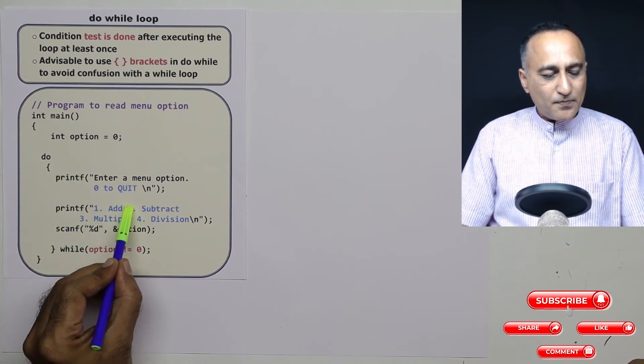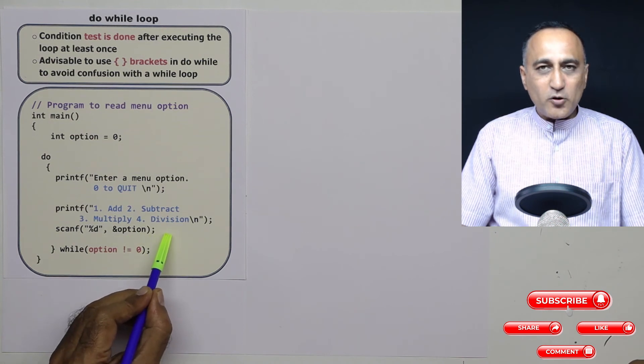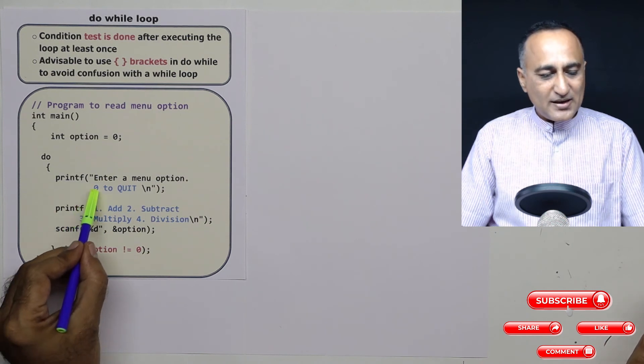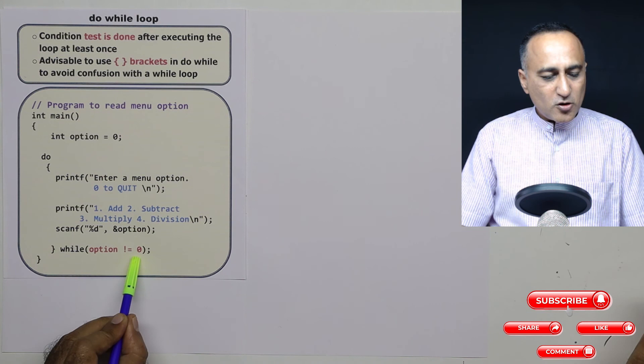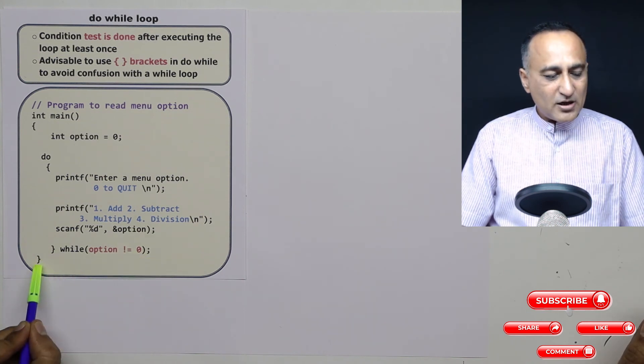Let's say the user entered two, then option becomes two, and I could call the module to do the subtraction. Suppose the user is done with testing the program, he or she enters zero. Once option becomes zero, zero not equal to zero is false because zero is equal to zero, then I will come out of the loop.